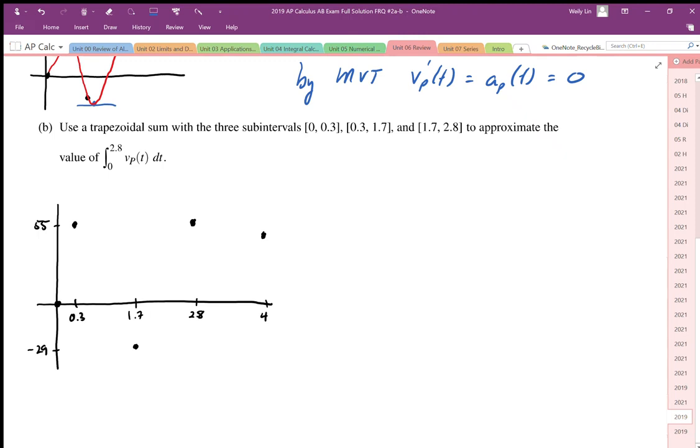In session 2b, it says use trapezoidal sum with three subintervals to approximate the value of the integral of v of t dt. And so we're basically going to find the area underneath this curve. So this represents our velocity function, and the area under the curve will be the trapezoidal sum we're looking for.